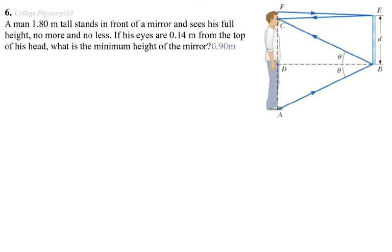Here's a flat mirror example. A man 1.8 meters tall (about six feet two inches) stands in front of a mirror and sees his full height — no more and no less. If his eyes are 0.14 meters from the top of his head, what is the minimum height of the mirror? I'm looking for how tall the mirror needs to be — let's call it H.